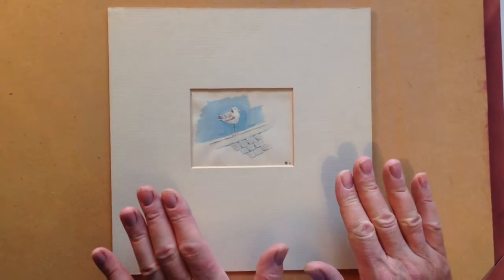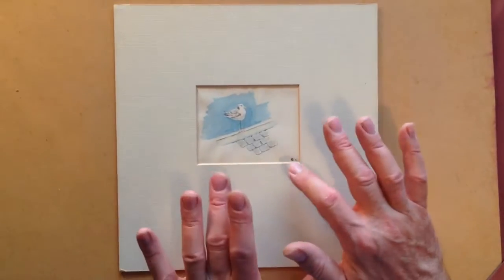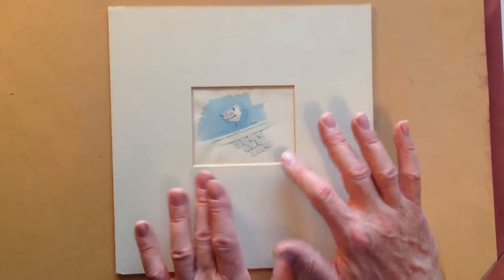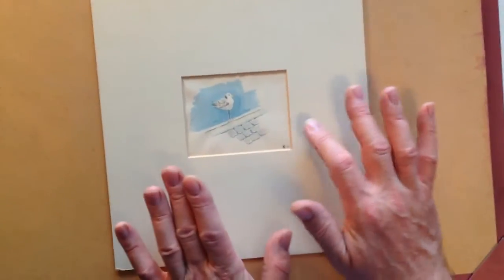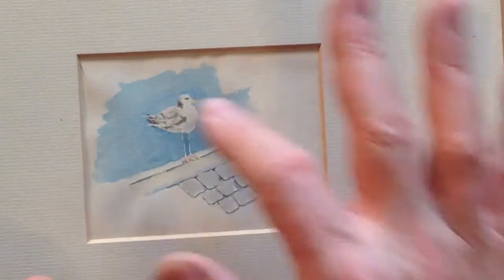Right, ladies and gentlemen, this is a charming little 7½ by 9 watercolour in a mount of a seagull with very long legs perched on a roof with 11 tiles suggesting a roof.